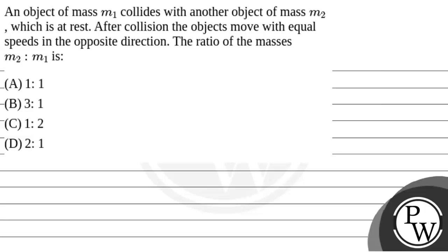Let's read the question. An object of mass m1 collides with another object of mass m2 which is at rest. After collision, the objects move with equal speeds in the opposite direction. The ratio of mass m2 to m1 is to be found.